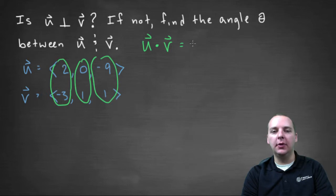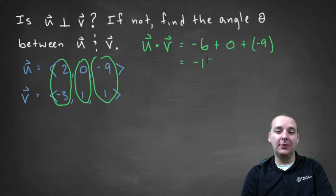So two times negative three is negative six. Remember you don't write the i, this is just, this is going to be a scalar when we are done. Zero times one is zero, and negative nine times one is negative nine. Add those all together you get negative fifteen. And unfortunately this is not zero,